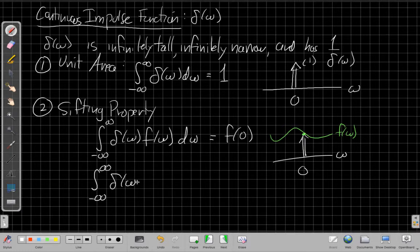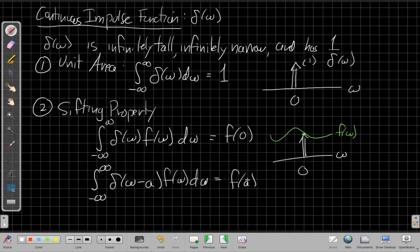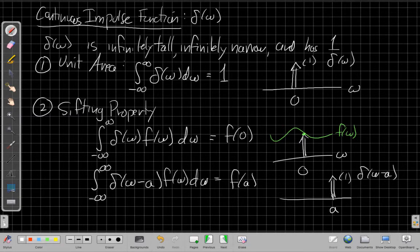So that if the impulse function, say I move it over to some value a, this is a shift in frequency, still multiplying by f of omega d omega, it's now moved over, and it's sifting out the value of the function at a. If I sort of sketch what I had above here, this is delta of omega minus a, has been shifted over, so the pulse is now located centered on a. And so now it's pulling out a different value of the function, that's why we call it sifting out.